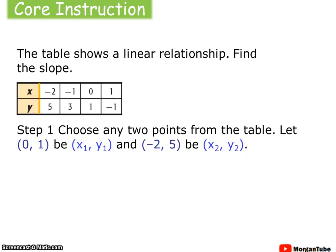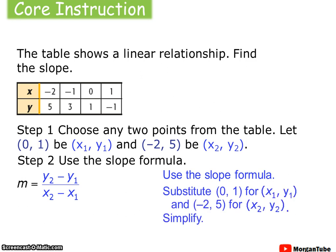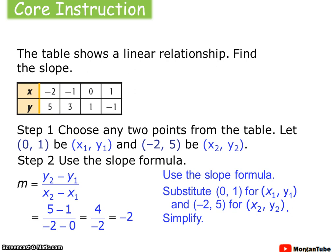From a table, we can pick any two ordered pairs to be our point 1 and point 2 in the slope formula. I'm going to choose (negative 2, 5) and (0, 1). Plugging them into our formula — change of y's over change of x's — this is going to give me a slope of negative 2. Now, if this is truly a line, then it doesn't matter which two ordered pairs we select; they're all going to have the same slope relative to one another.